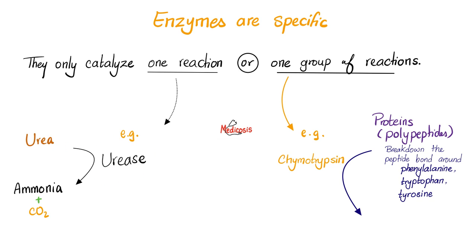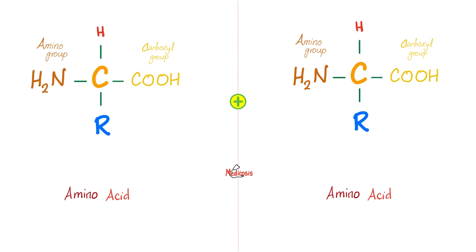Such as the famous Helicobacter pylori which can lead to peptic ulcer disease. How about enzymes that are specific to one group of reactions? This is chymotrypsin. Chymotrypsin can break down proteins or polypeptides by breaking down peptide bonds around phenylalanine, tryptophan, or tyrosine. So it's not just one thing, it's a group of things within the same category. Do you remember when we talked about the peptide bond before?